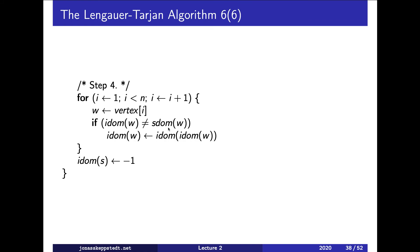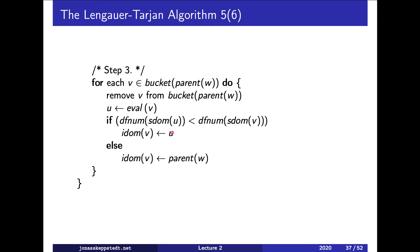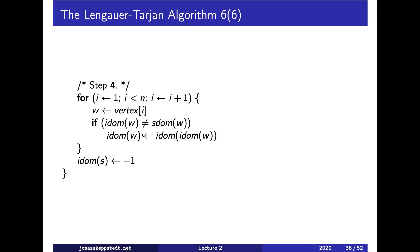What we do then is set the immediate dominator of w to be the immediate dominator of that u which we saved in idom. So we say idom(w) is equal to idom(idom(w)).